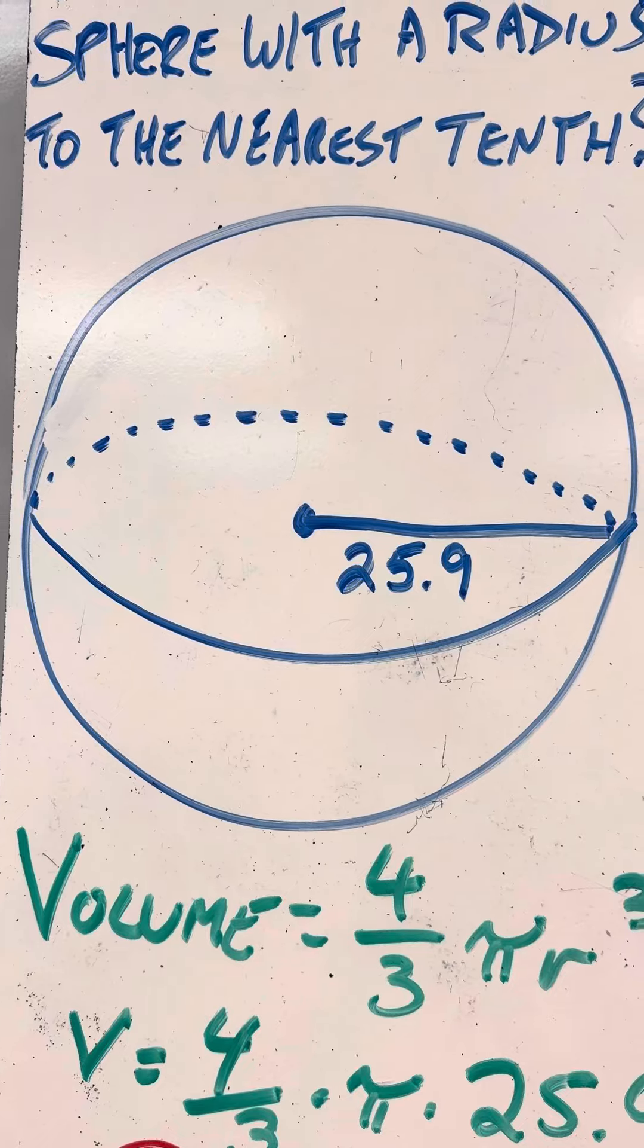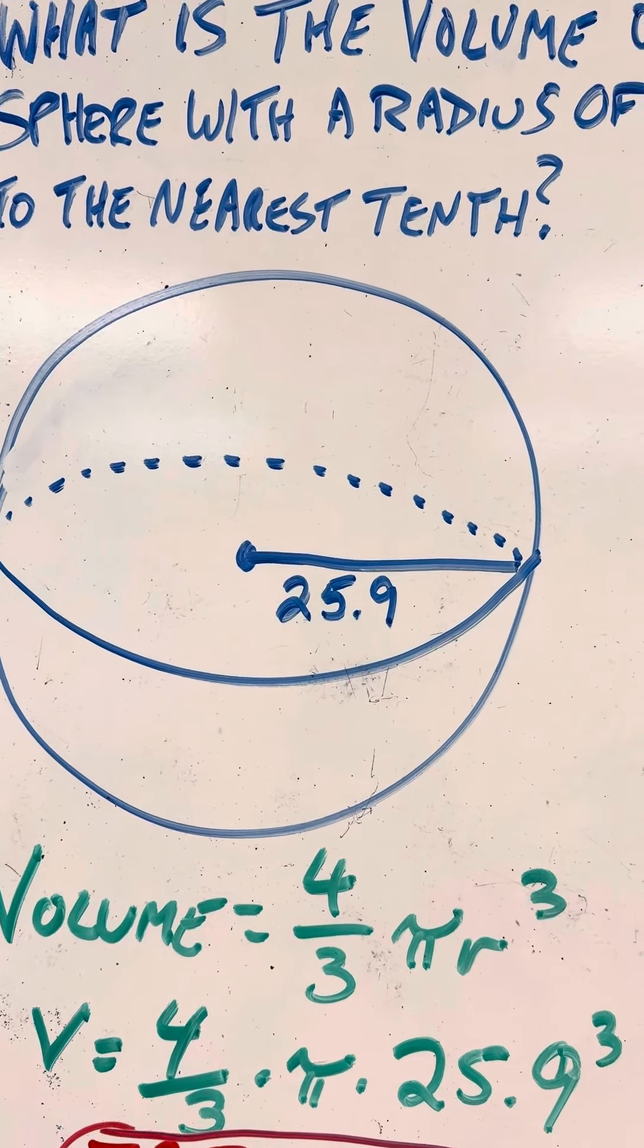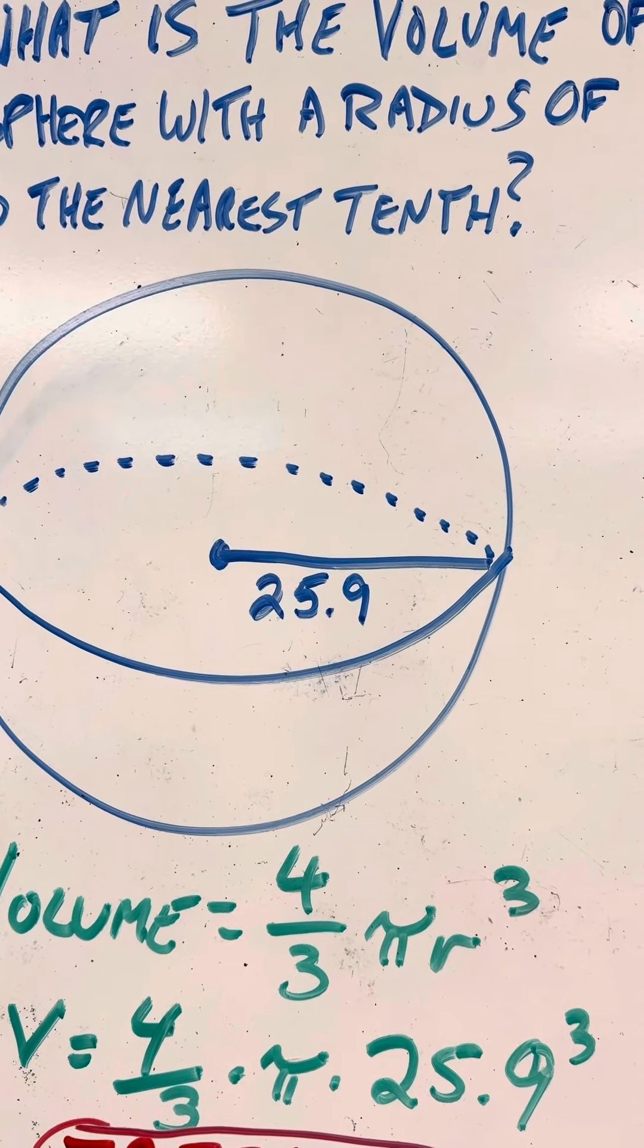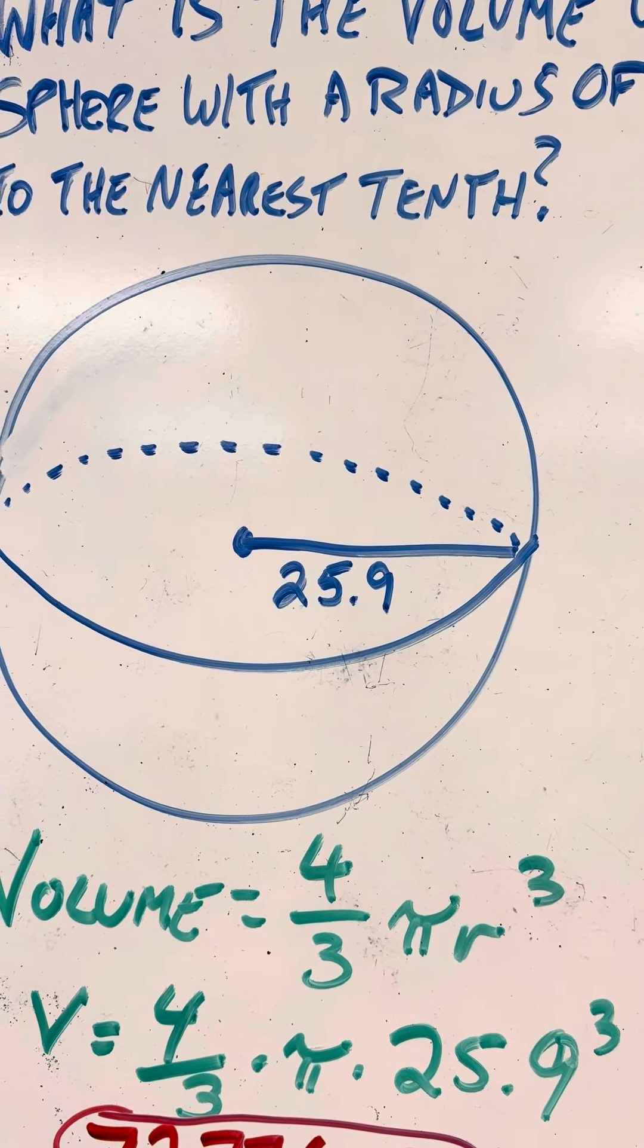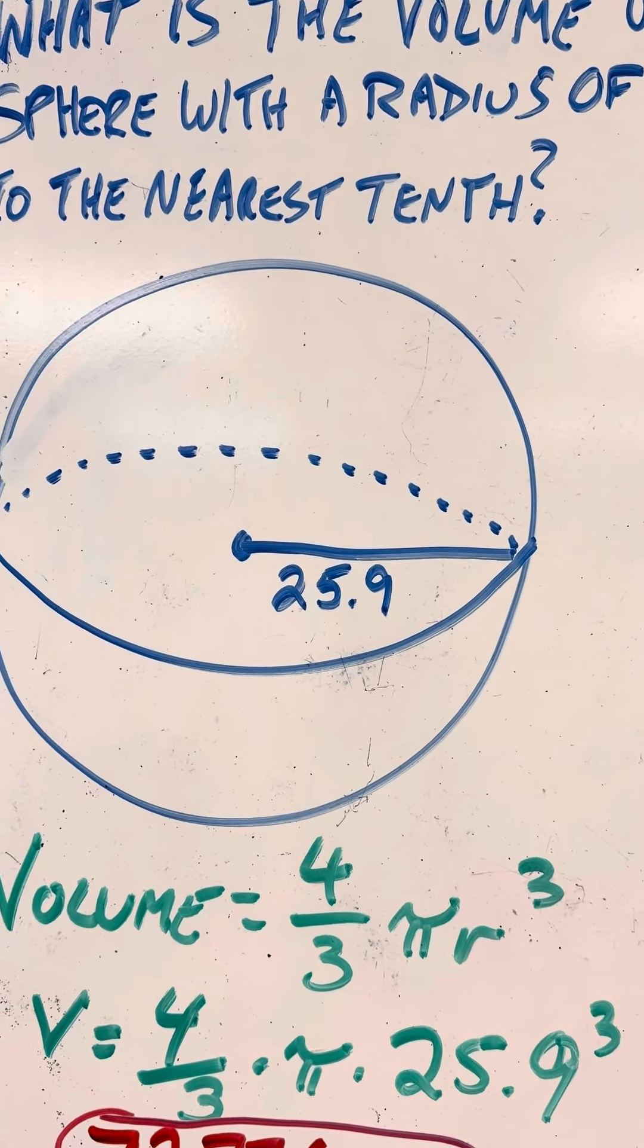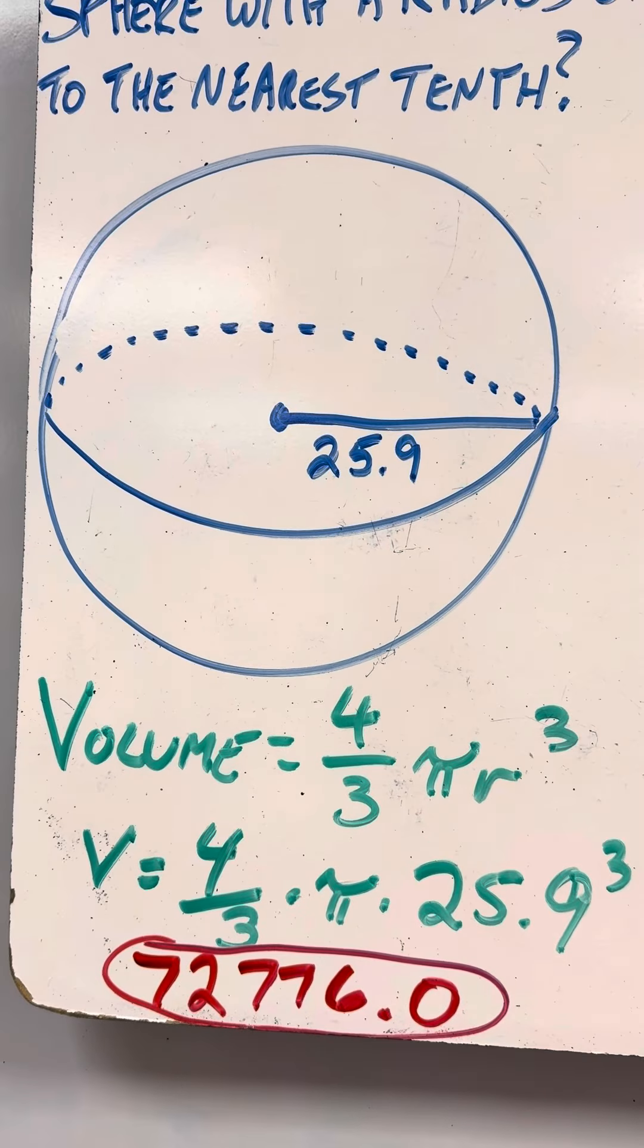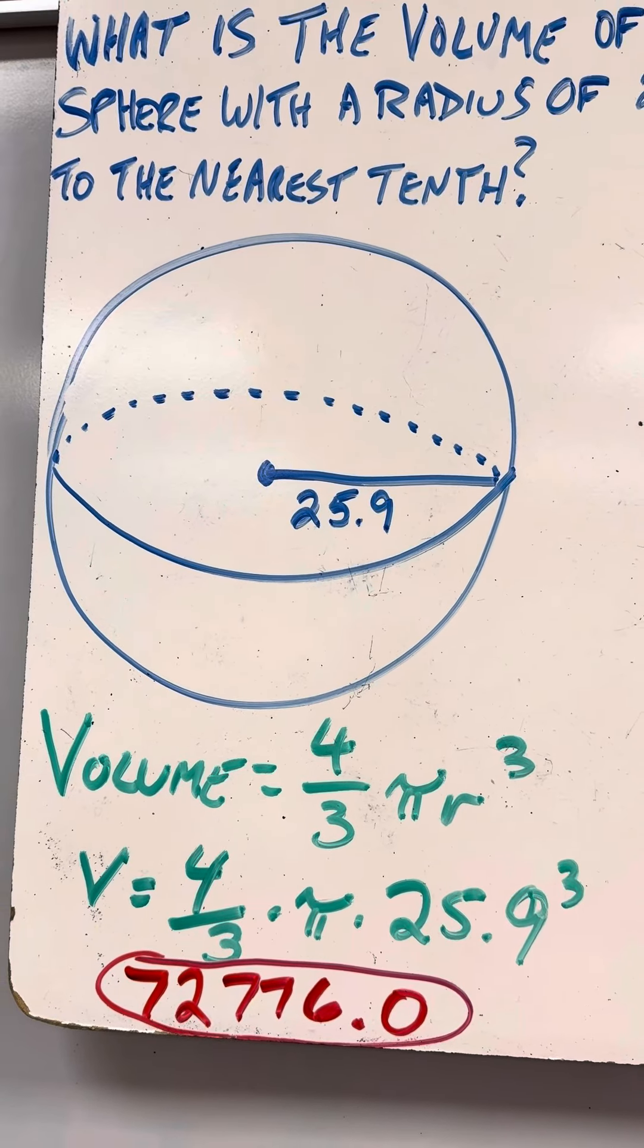On your regular calculator, on a phone, you just do 4 divided by 3 times pi. Use the pi key. Times 25.9. Then hit the x to the third key. That will take 25.9 to the third power, giving you 72,776.0 when you round to the nearest tenth.